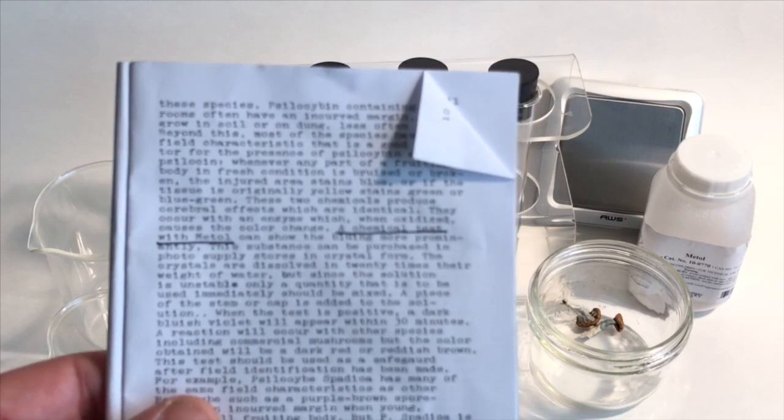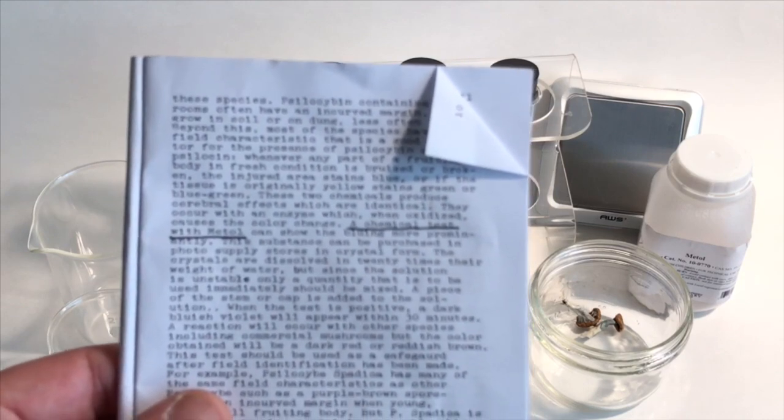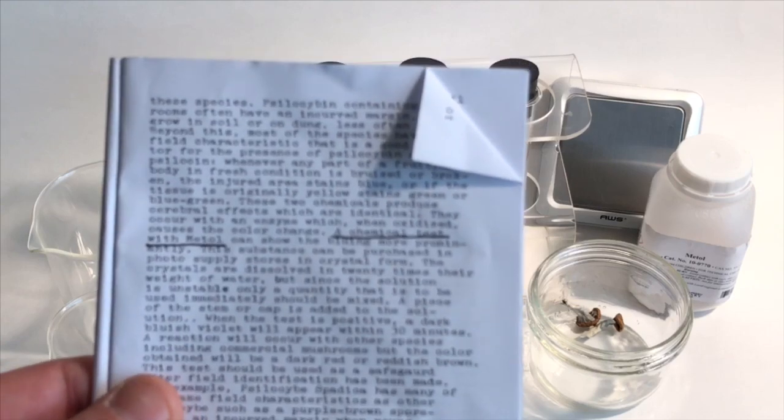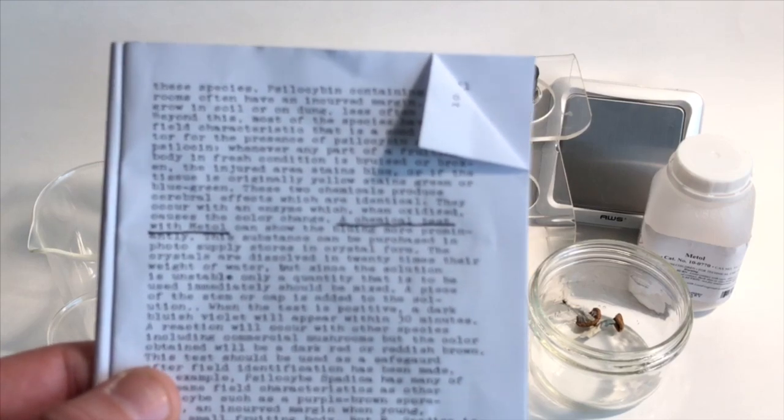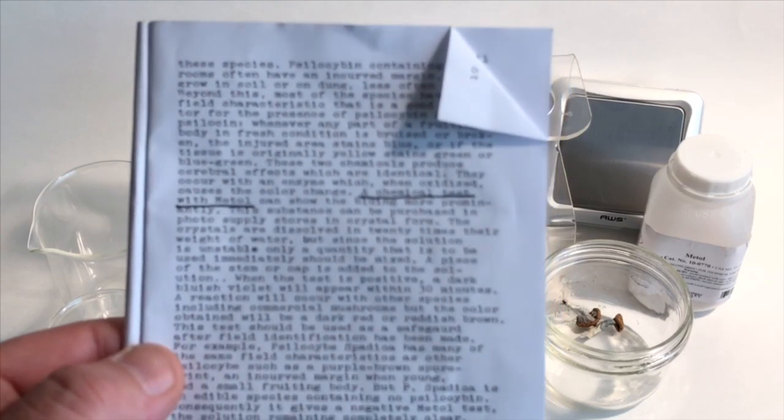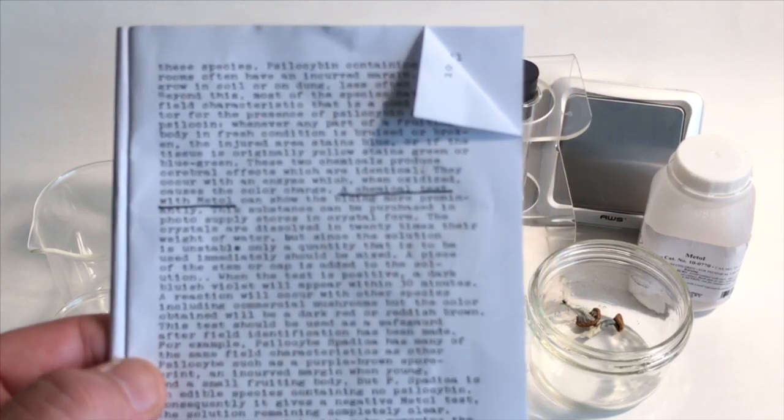When the test is positive, a dark bluish violet will appear within 30 minutes. A reaction will occur with other species including commercial mushrooms, but the color obtained will be a dark red or reddish brown. This test should be used as a safeguard after field identification has been made.